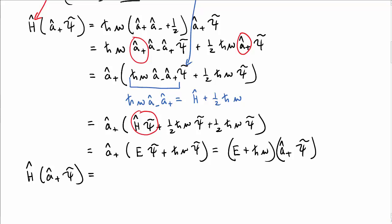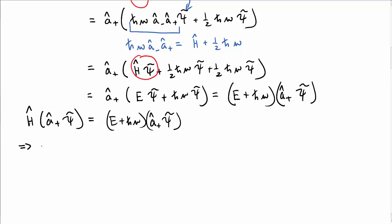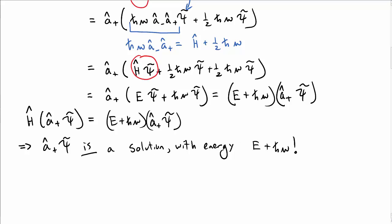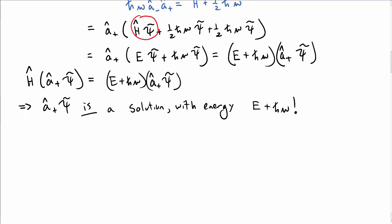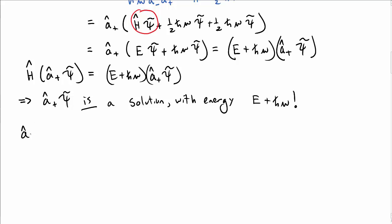Let's summarize what we have. We operated the Hamiltonian on our new state â₊ψ̃ and got back that same state with an energy of Ẽ + ℏω. This is why we call â₊ a raising operator: â₊ψ̃ is an eigenfunction of the Hamiltonian with a new energy larger by ℏω.